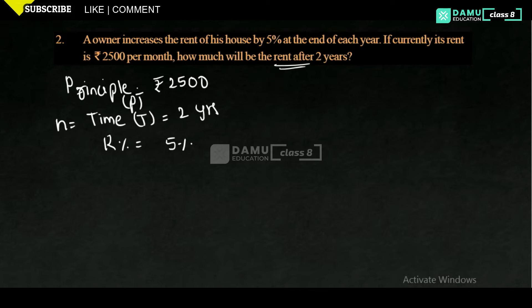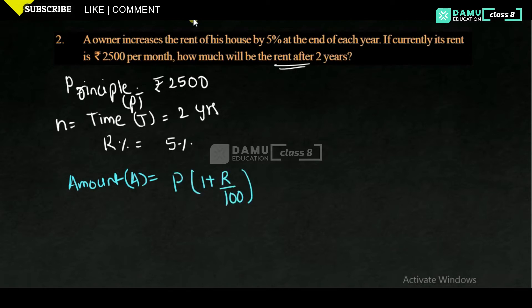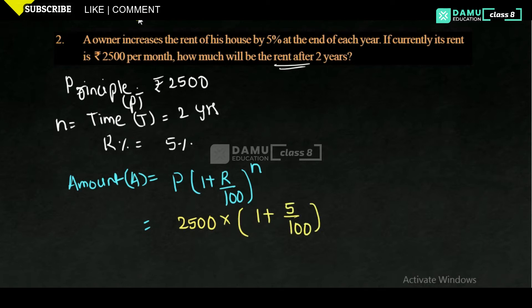We need to find the amount after two years. The amount capital A will be equal to the compound interest formula, that is P into one plus R by 100 whole power N. Here N is the number of years and R is the rate of interest. So P value is 2500, into 1 plus 5 by 100, whole power 2.